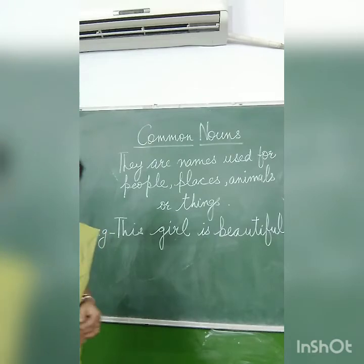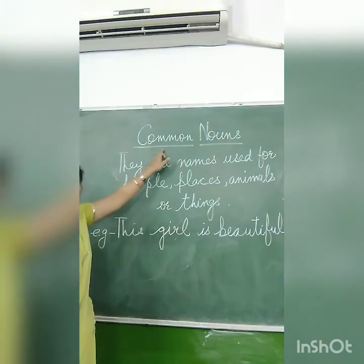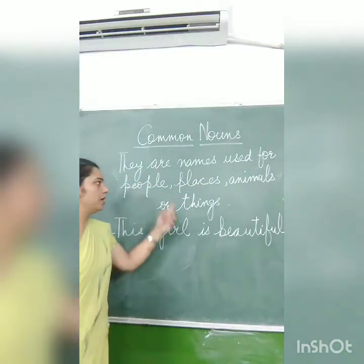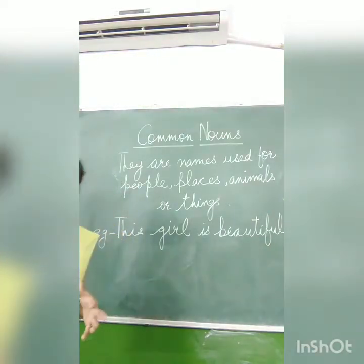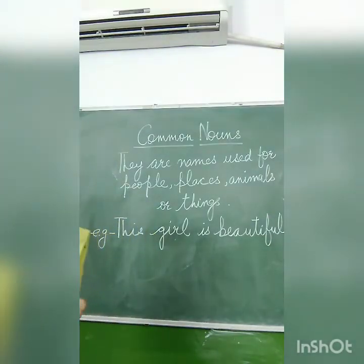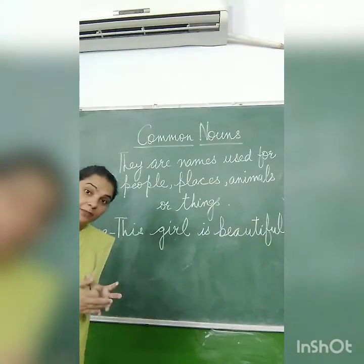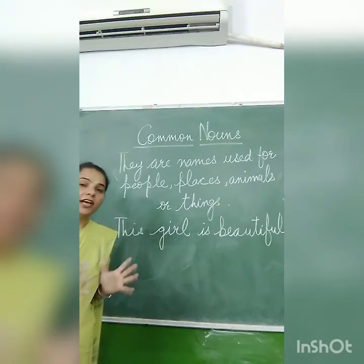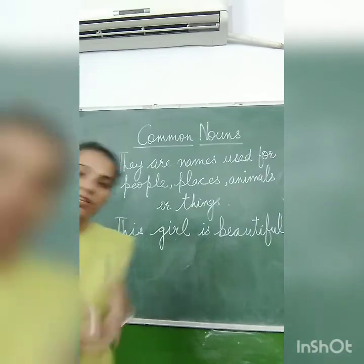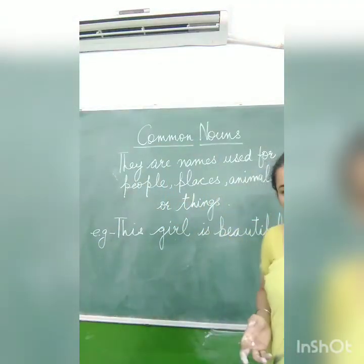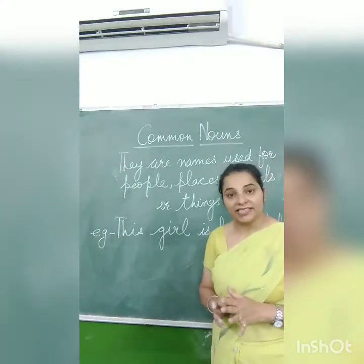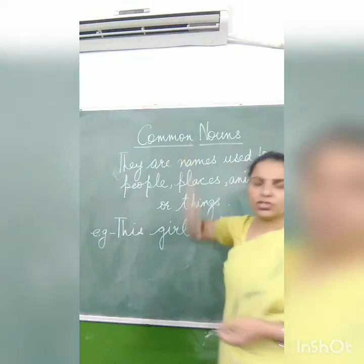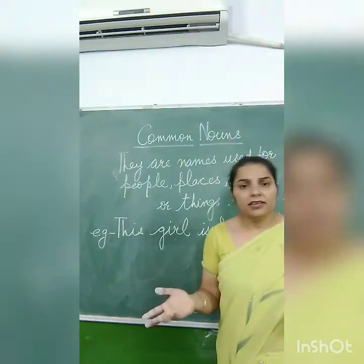Now the first type we will study is common nouns. Common nouns are names used for people, places, animals, or things in general. These are names that we use for any type of person, any type of thing, any type of place. So those words are known as common nouns — the word 'common' itself tells us that we can use them generally for everyone.